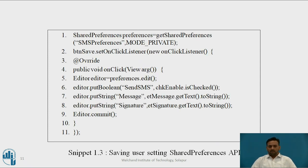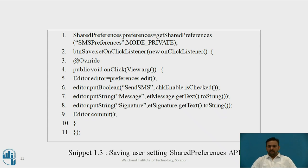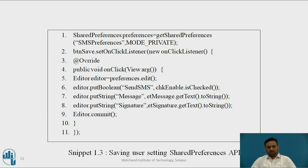You can see on the screen how saving user settings preferences works in the API. A particular object is created in Private mode. When the button is clicked, it checks the enabling of the setting, a particular message is written in text format, and with a particular signature it is sent to the caller.